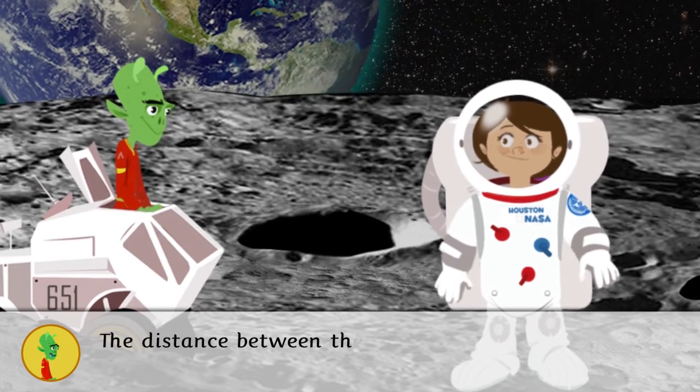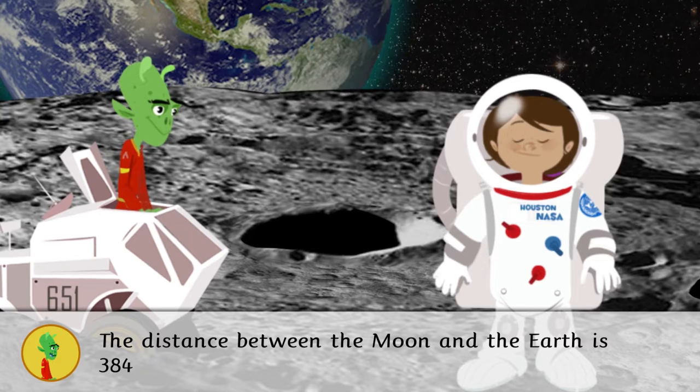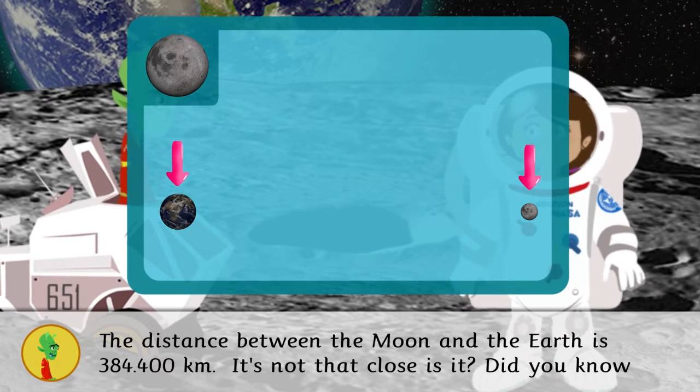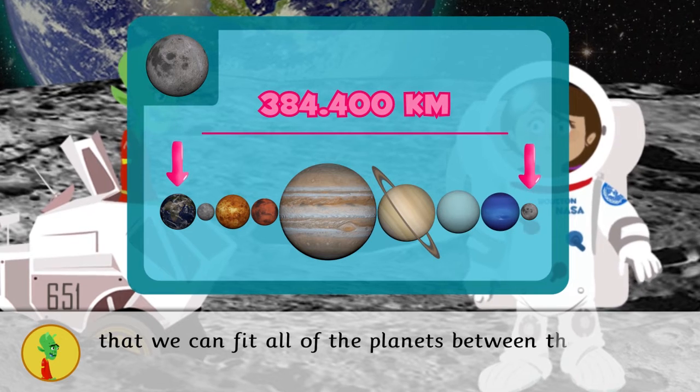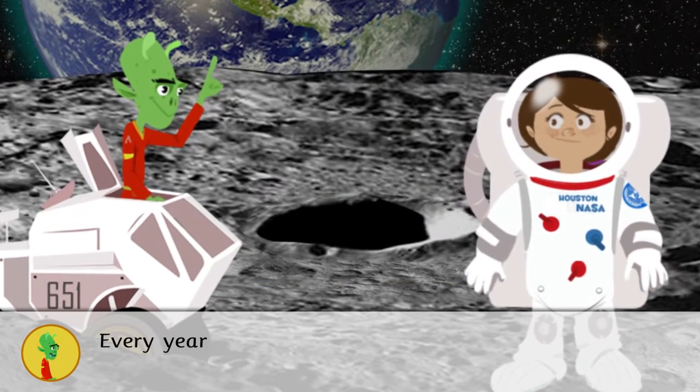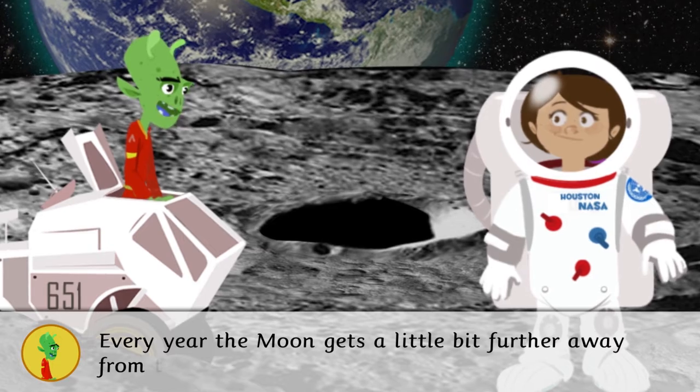The distance between the Moon and the Earth is 384,400 kilometers. It's not that close, is it? Did you know that we can fit all the planets between them? Every year, the Moon gets a little bit further away from the Earth.